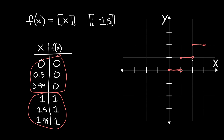You only need to find two steps because the pattern always continues. If one step is one unit long, all the steps are one unit long. The closed circle goes on the left side of each step and the open circle goes on the right — closed, open, closed, open — and it keeps going forever.